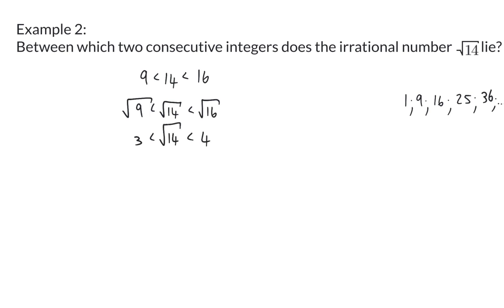And now I can determine the square root of 9 and the square root of 16 because I specifically chose perfect square numbers. And therefore, I know that the square root of 14 lies in between the two integers 3 and 4.